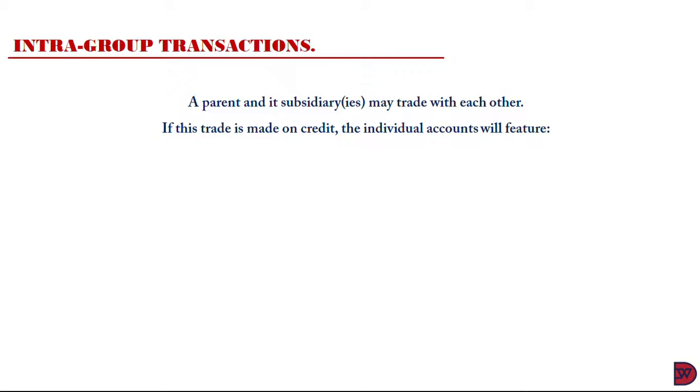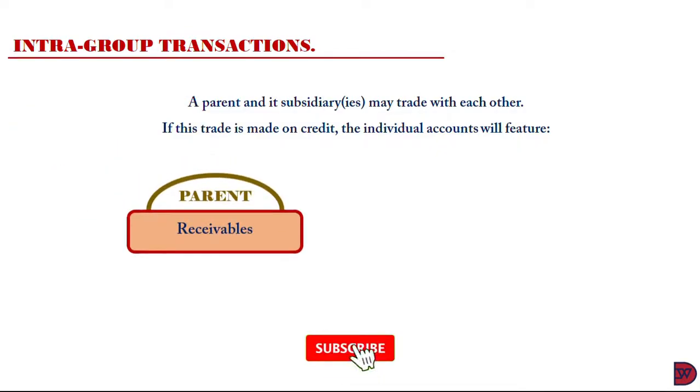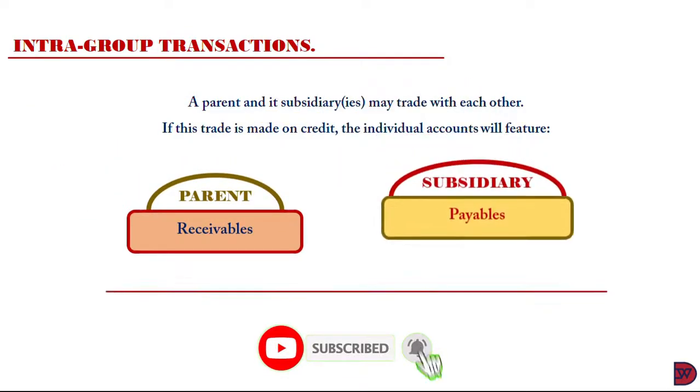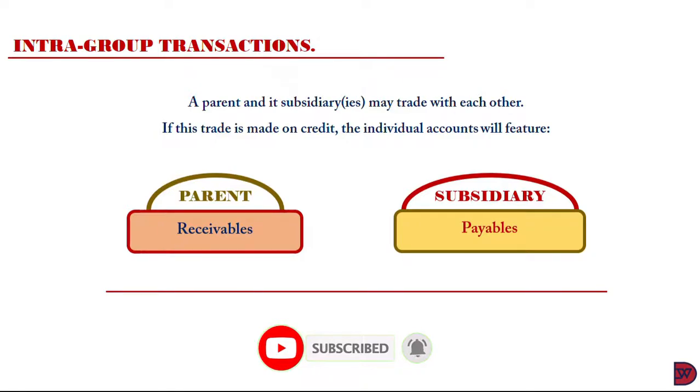If the transaction is made on credit, this will lead to the recording of both a receivable and payable. For example, if a parent P sells to a subsidiary S on credit, the parent P will present in its individual books a receivable expected from S, whilst S will present the payable to P.